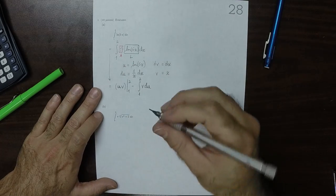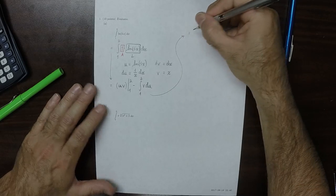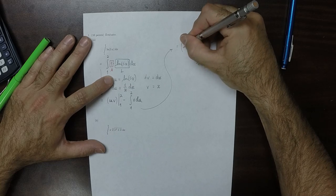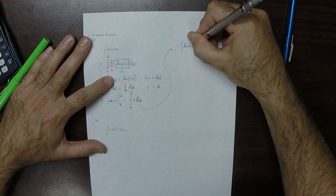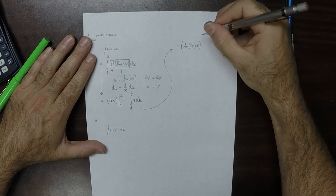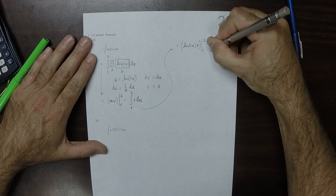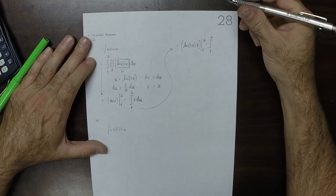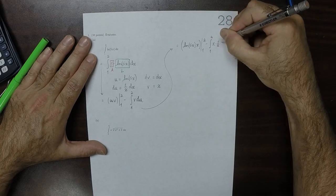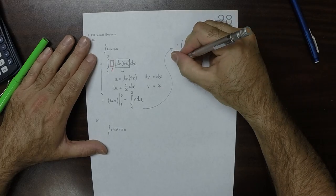So on this specific exercise, that is u times v, log 5x times x from 1 to 2, minus integral from 1 to 2 of v du. So x times 1 over x dx. So the x and the 1 over x, they cancel.